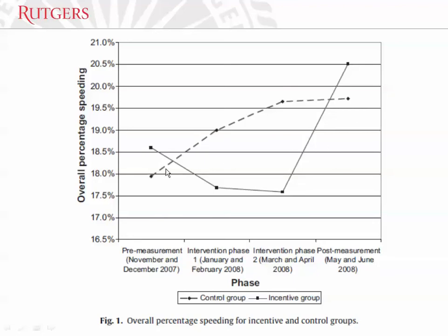Looking at the results: the dashed line is the driving habits of the control group, and the solid line is the driving habits of the treatment group. They were hooked up with the GIS technology in the beginning period. These two middle periods are when the pay-as-you-drive bonuses kicked in for the treatment group. On the left-hand side is the percentage of the time they were driving above the speed limit — in the range of maybe about 17% to about 21% or so. Overall, roughly a fifth of the time they were driving above the speed limit.